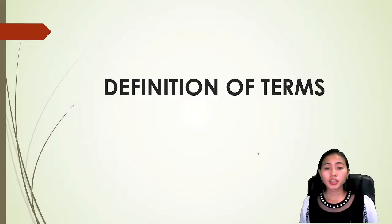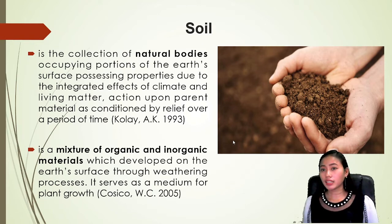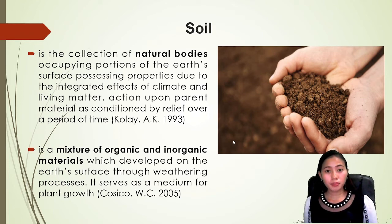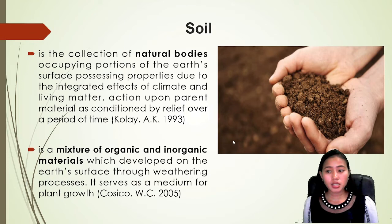Let's discuss the definition of terms, starting with soil. According to Kulay aka in 1993, soil is the collection of natural bodies occupying the portions of the earth's surface, possessing properties due to the integrated effects of climate and living matter, action upon parent material conditioned by relief over a period of time. According to Cosico WC in 2005, soil is a mixture of organic and inorganic materials which develop on the earth's surface through weathering processes.